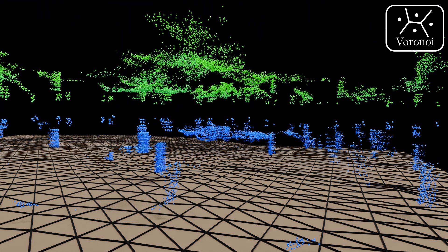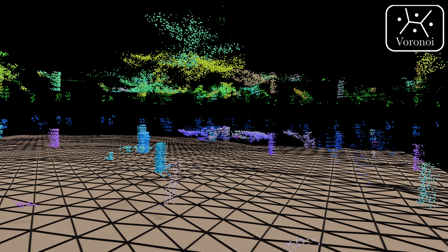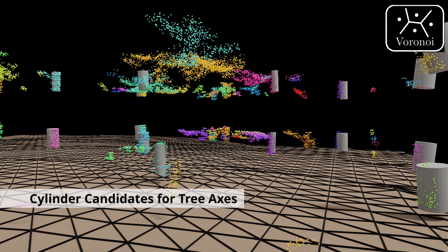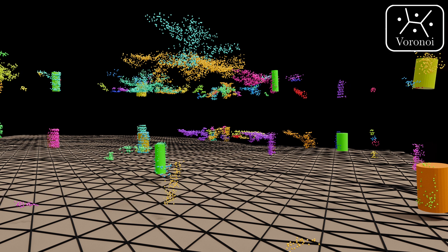For this, we crop the point cloud at several height intervals and cluster using the DBSCAN algorithm. Then we fit cylinders to the clusters and judge the fitting quality using a scoring function. Finally, we select the best ones for every tree using non-maximum suppression.